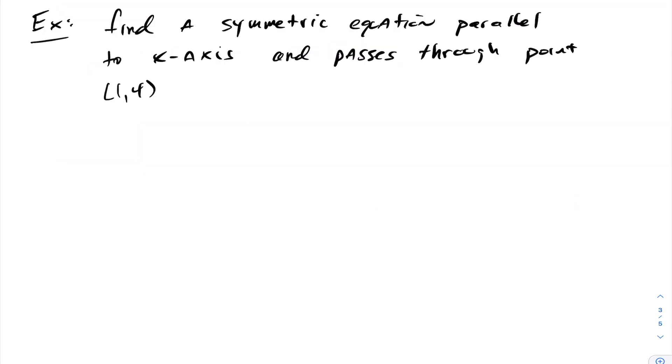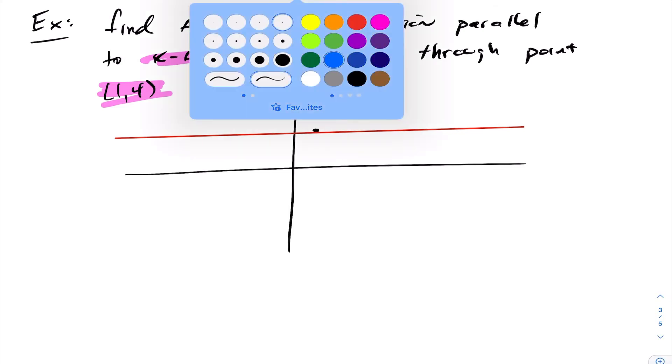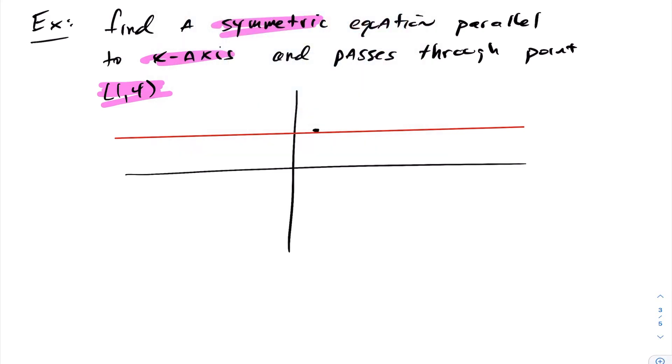In our next example here we want to find symmetric form of an equation that's parallel to the x-axis and passes through the point (1,4). So notice we're in R2 here, so if you do a quick little sketch here we've got the point (1,4), maybe it's right about here, and the line that we want is parallel to the x-axis. So what I need here is I need to create a direction vector and a point.